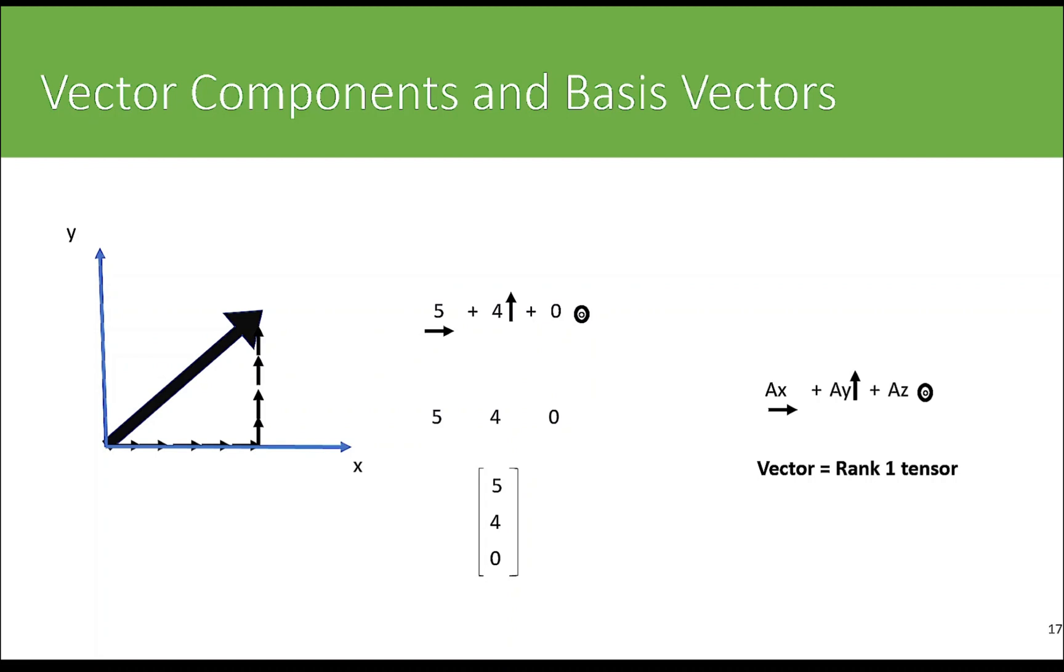Notice that we need one index for each of these because there is only one direction indicator per component. So this is what makes a vector a tensor of rank 1. So it has only one index. You will see in a minute why it's so powerful to represent tensors as this combination of components and basis vectors. But first, I want to show you some examples of higher rank tensors.